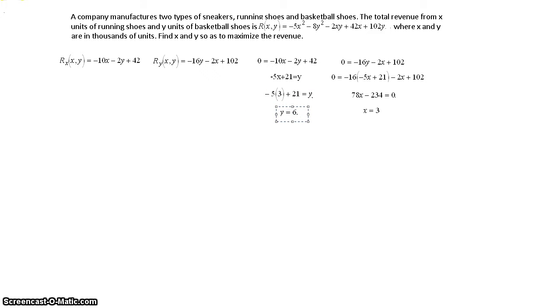So, right there, we have the answer to the problem. The point is 3, 6. And that means that to maximize revenue, the company is going to want to make 3,000 running shoes and 6,000 basketball shoes. But, there is one more step. Even though there's only one critical point, we still want to use the second partials test to confirm that we are getting a maximum. We're not getting a minimum. We're not getting a saddle point.